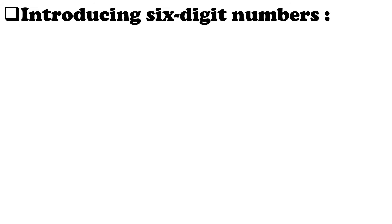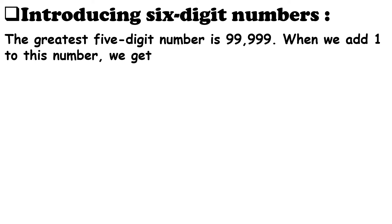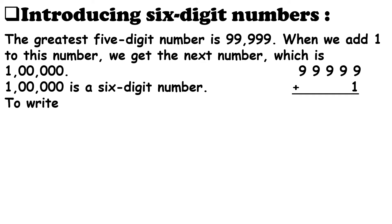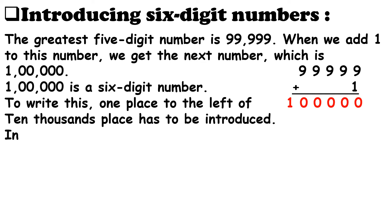So students, in the last lecture we learnt about 5-digit numbers and we solved a few sums based on them. Today we are going to study about 6-digit numbers. The greatest 5-digit number is 99,999. When we add 1 to this number, we get the next number, which is 1 lakh. 1 lakh is a 6-digit number.